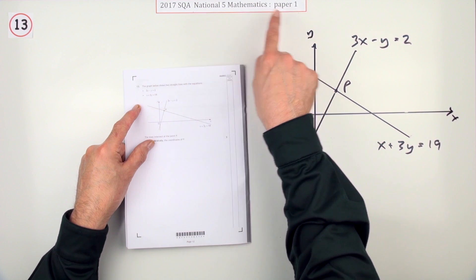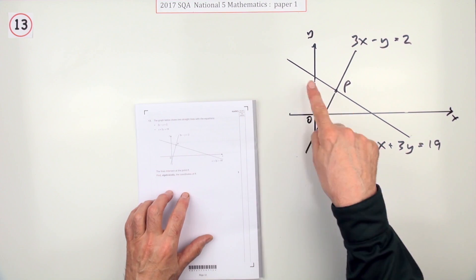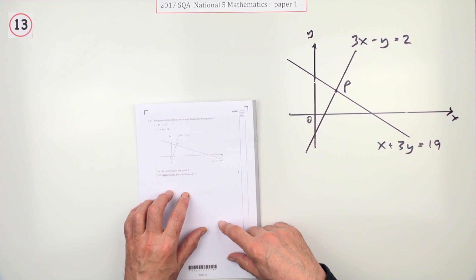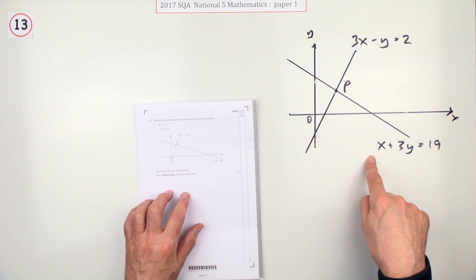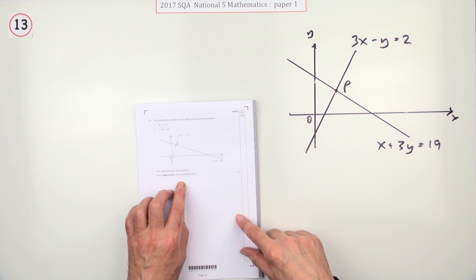Number 13 from paper 1 of the 2017 National 5. There's a diagram here involving the intersections of lines. You've got the equations of these two lines and it says find algebraically this point of intersection.